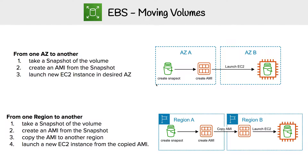Now for regions, there's a little bit more work involved. It's going to be the same process to begin with — we're going to create a snapshot, and from there we're going to create an AMI from that snapshot. But in order to get into another region, we're going to have to copy that AMI.